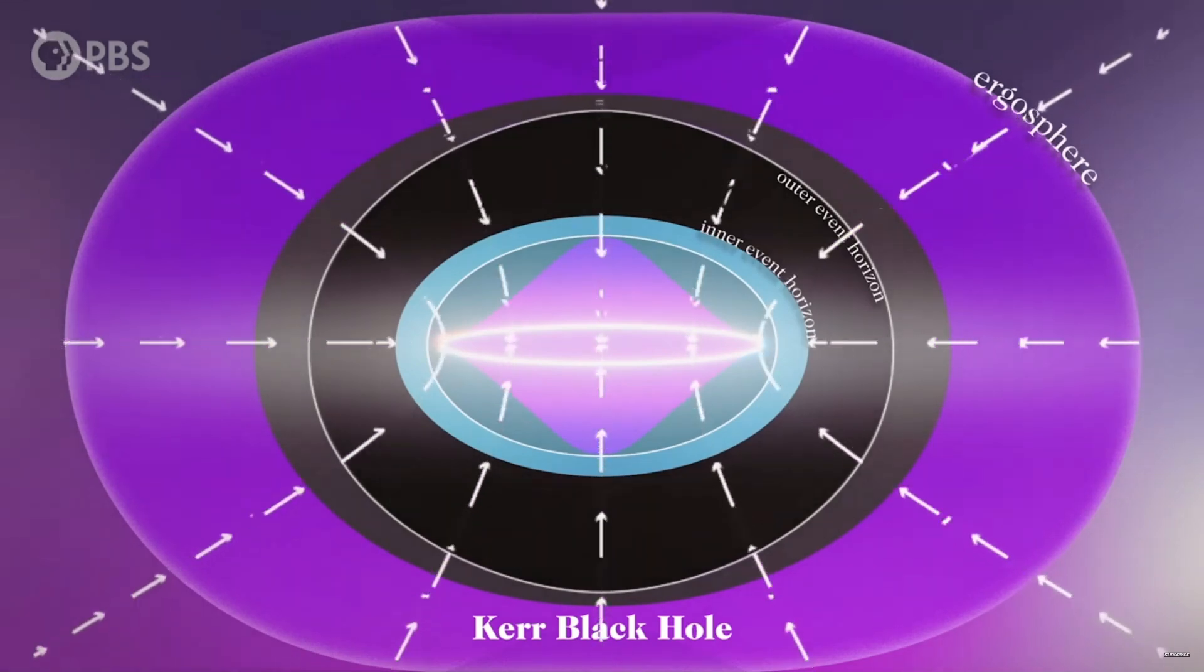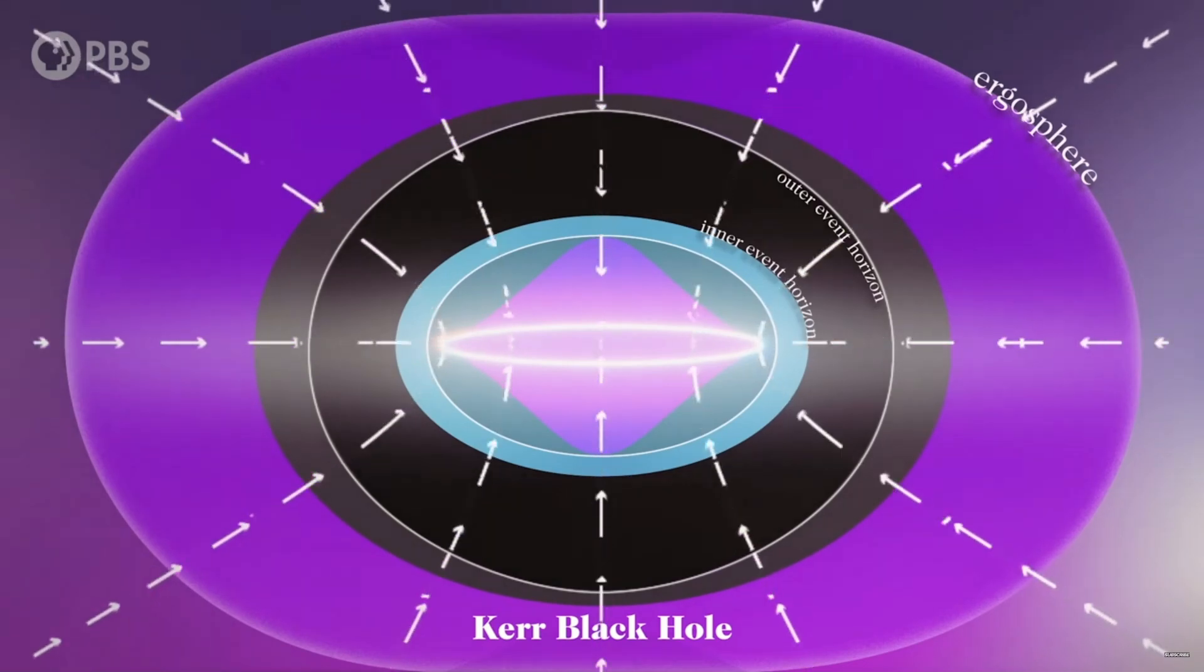The spin of a black hole is measured on a scale from 0 to 1, known as the Kerr parameter, 0 being no spin whatsoever, and 1 being the maximum hypothetical spin.